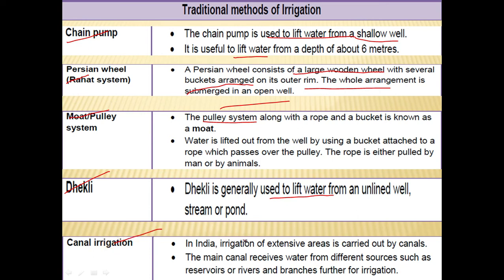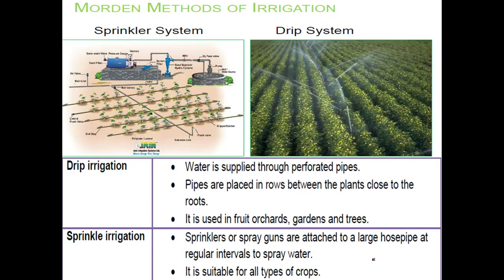In canal irrigation, irrigation of extensive areas in India is carried out by canals. The main canal receives water from different sources such as reservoirs or rivers, with branches for further irrigation. Overall, traditional methods use cattle or human labor to pull water from a water source. These methods are considered cheaper but not very efficient, which is why modern methods have been adopted.